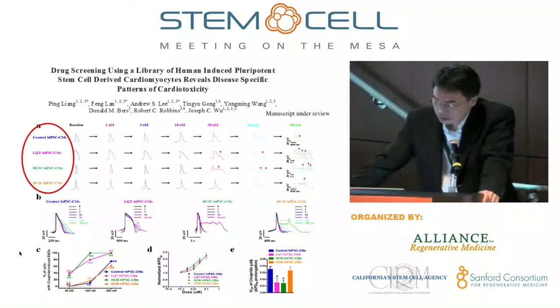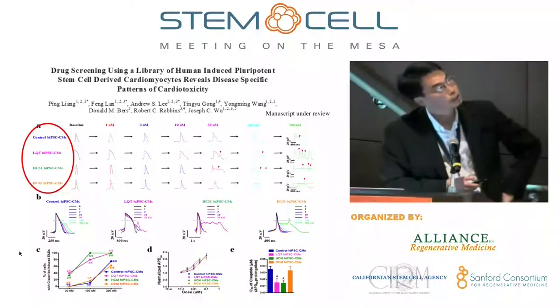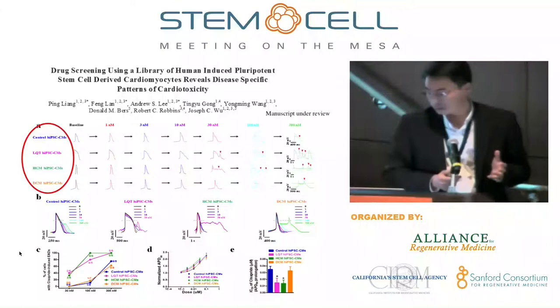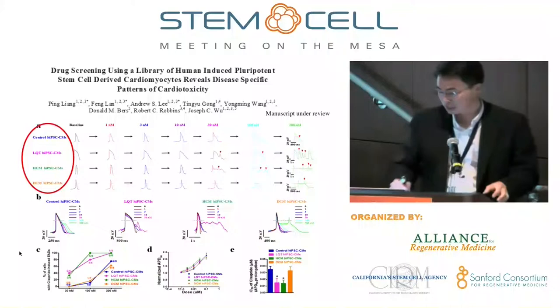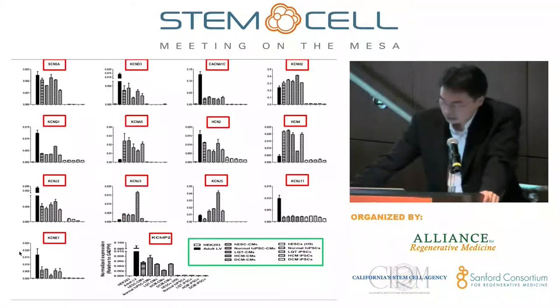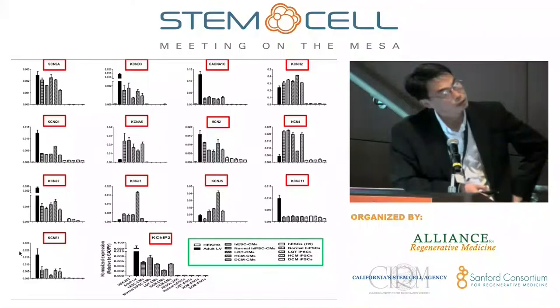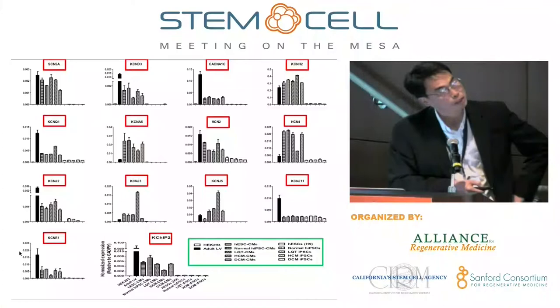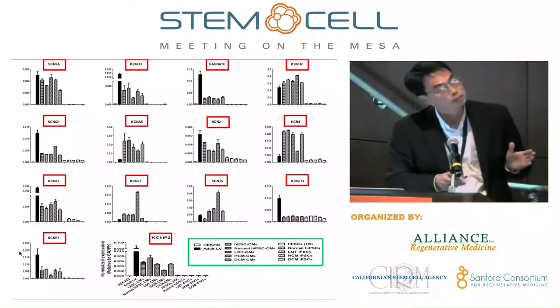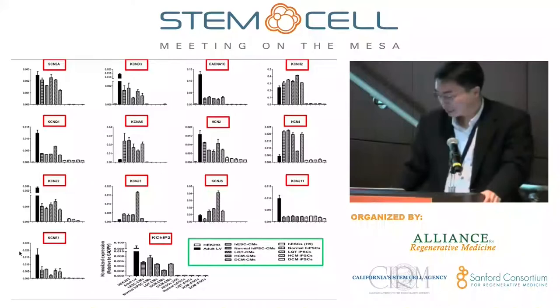We've actually been doing iPSC drug screening work for a while. The idea is that you take a common drug such as Cisapride and test it against control patients, long QT patients, hypertrophic patients, and dilated patients at different doses — creating an encyclopedia of drug response for a given drug across multiple patients, and vice versa, multiple drugs on a single patient. On a single-cell level, we're looking at all the channel genes and their variation across cardiomyocytes from all these patient groups. Ideally in the future we'd like to do this at a population level and build a bell curve of channel gene differences.